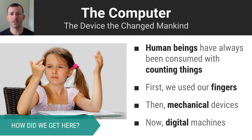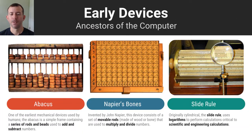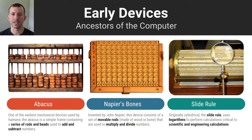First, they started with mechanical devices. Then, with the advent of electricity, they were able to create digital devices that led us to the computer of today. In the early times, there were mechanical devices used to assist in counting tasks, like the abacus, Napier's bones, and the slide rule.